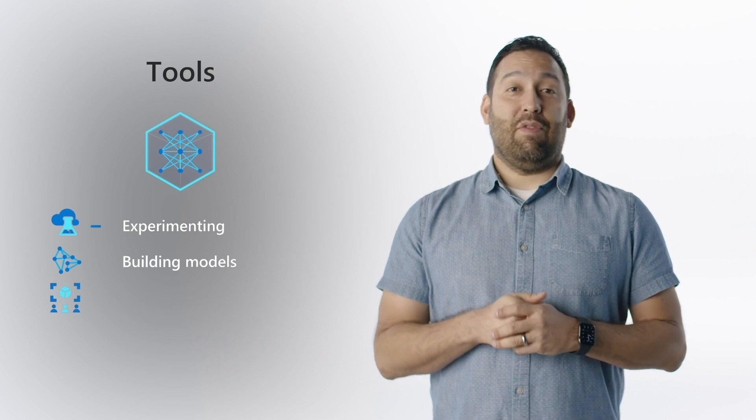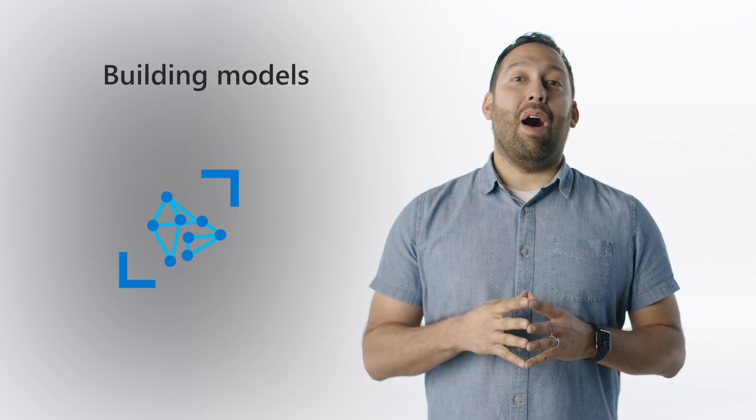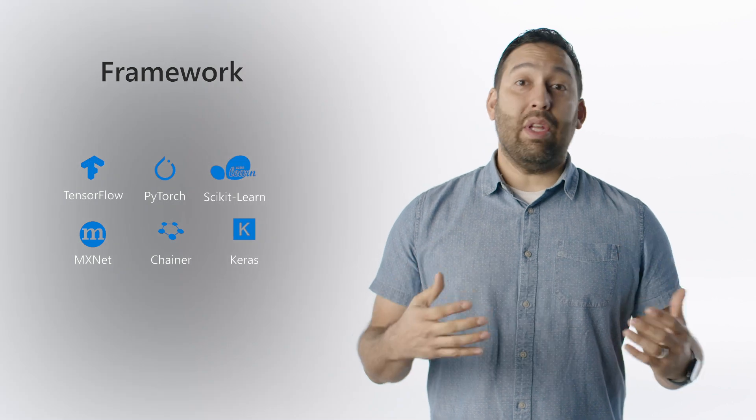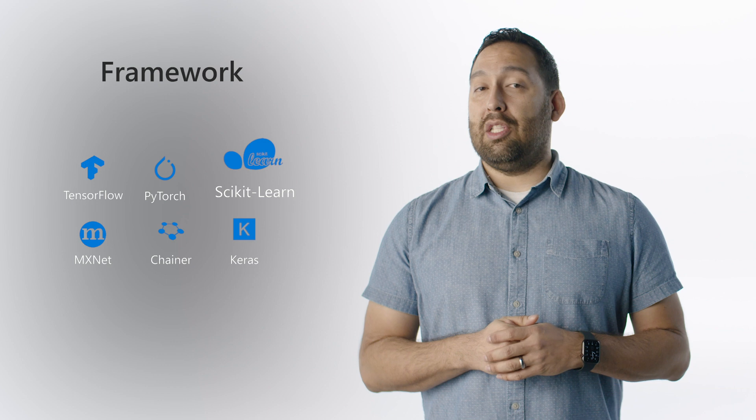Now let's talk about libraries and frameworks for building models. Building models is the funnest part — at least for me — of machine learning. When it comes to building models, there are several amazing frameworks that help. Generally, the best thing to do is to start simple. Scikit-learn is a powerful framework that has several pre-built models that can be tried out. Scikit-learn has built-in models for classification, regression, and clustering. The library also has functionality for dimensionality reduction, model selection, and even pre-processing for feature extraction and normalization.